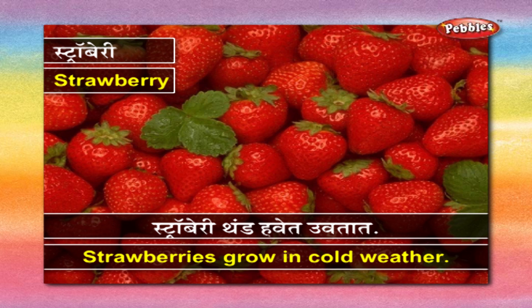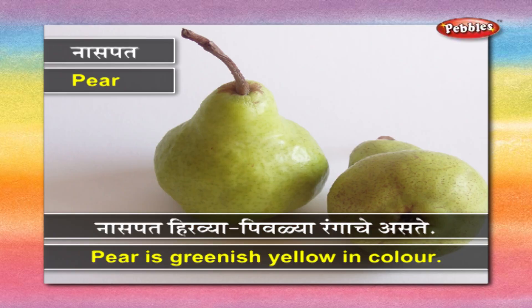स्ट्रॉबेरी - स्ट्रॉबेरी थंड हवेत उगवतात. नासपती - नासपती हिरव्या पिवळ्या रंगाची असते.